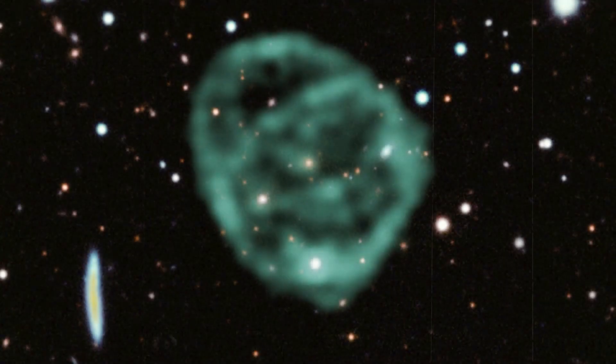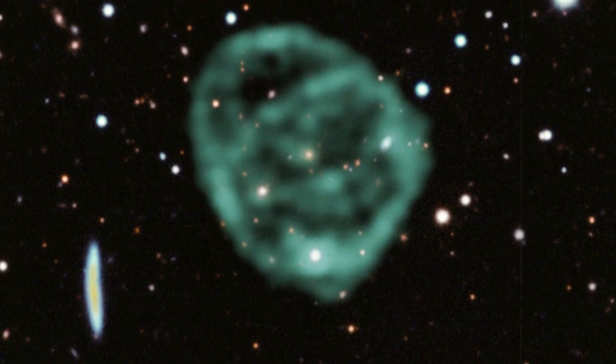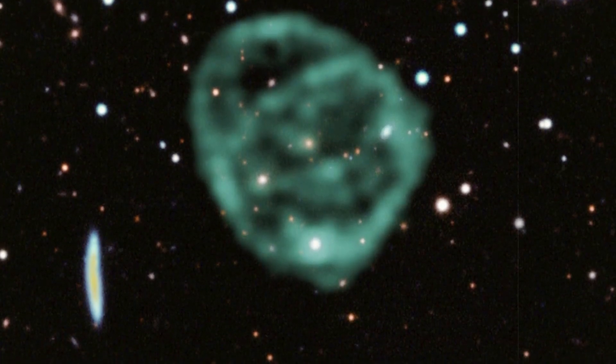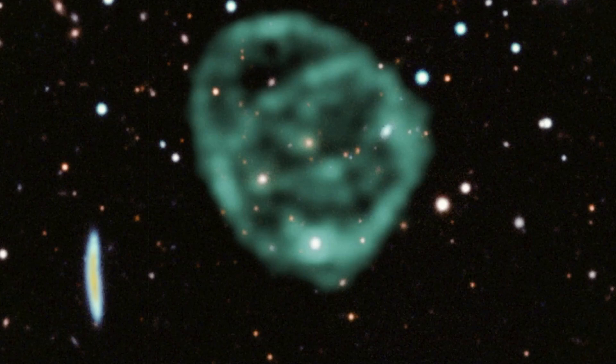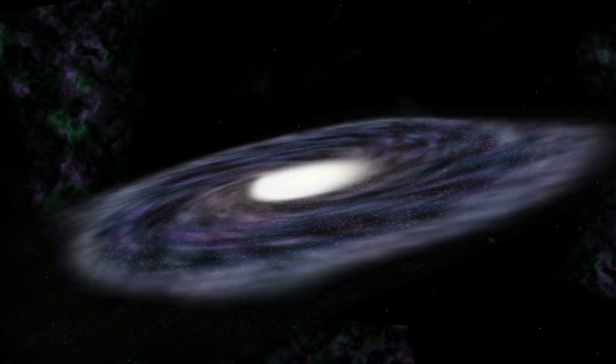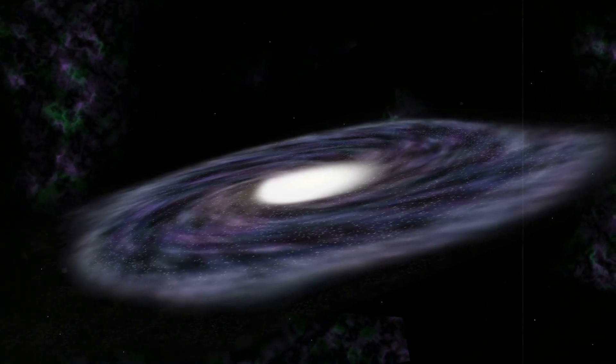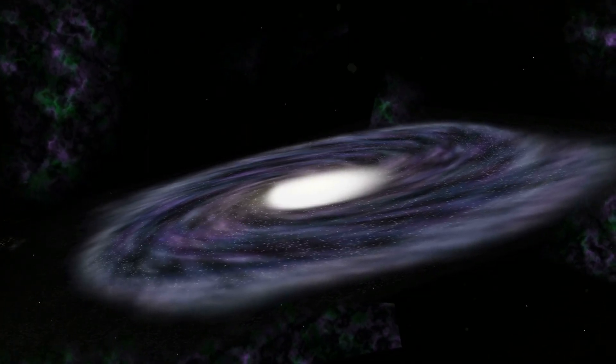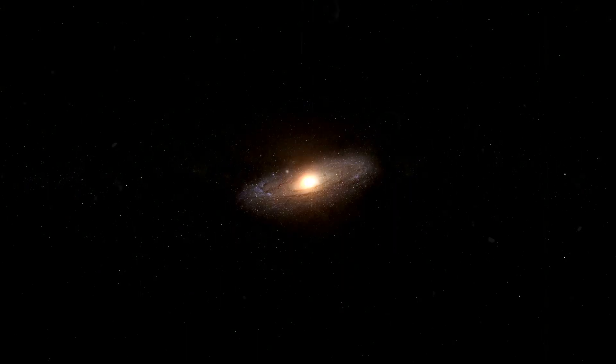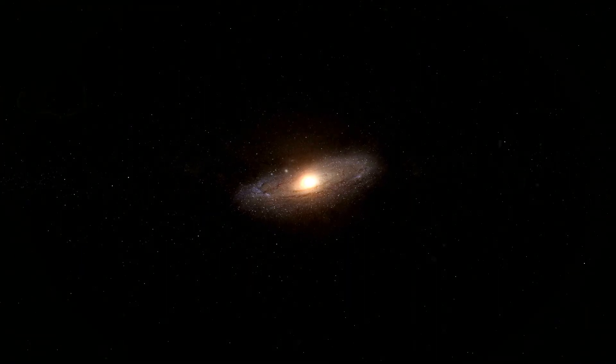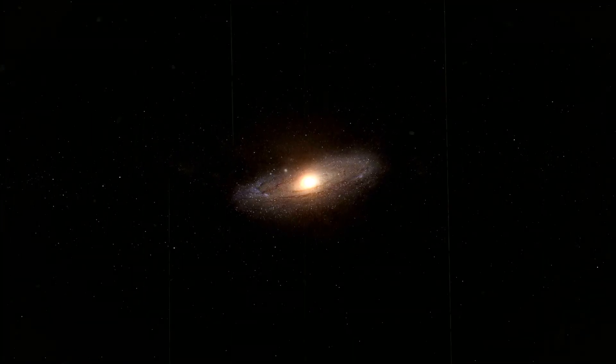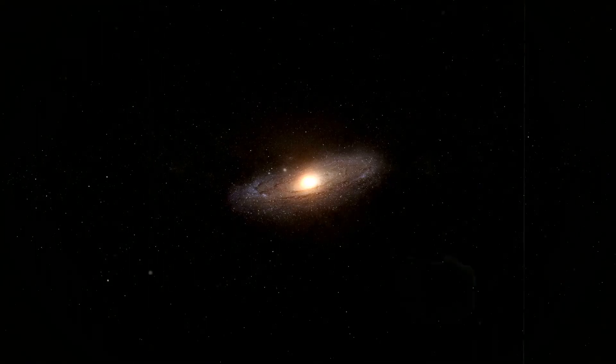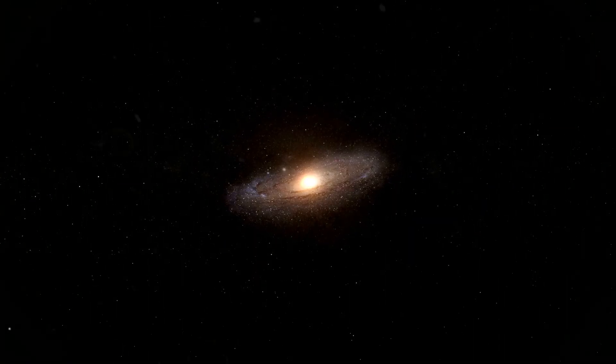The problem is not just the size of these structures, it is the precision. A circle, after all, is geometry's simplest perfection. Nature in space tends toward chaos. Galaxies collide in jagged swirls. Nebulae scatter in irregular filaments. Jets from black holes twist in spirals. To carve a circle across a million light-years requires something that acts with balance, symmetry, and relentless power. The universe, vast and wild as it is, rarely draws straight lines or perfect arcs, yet here we are confronted with circles etched in radio energy across gulfs of space.